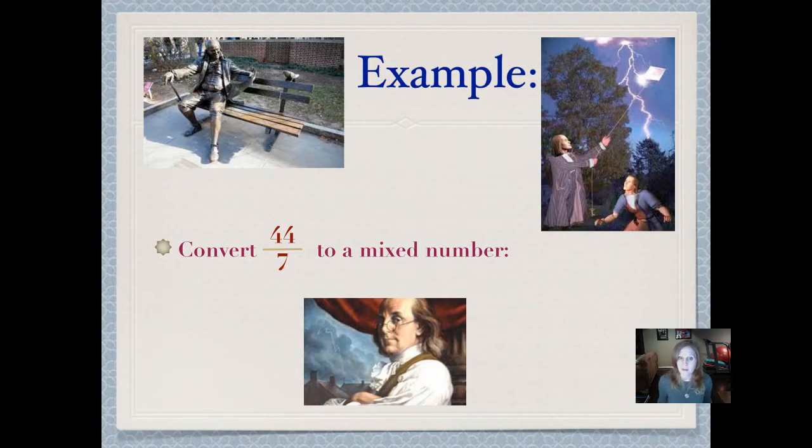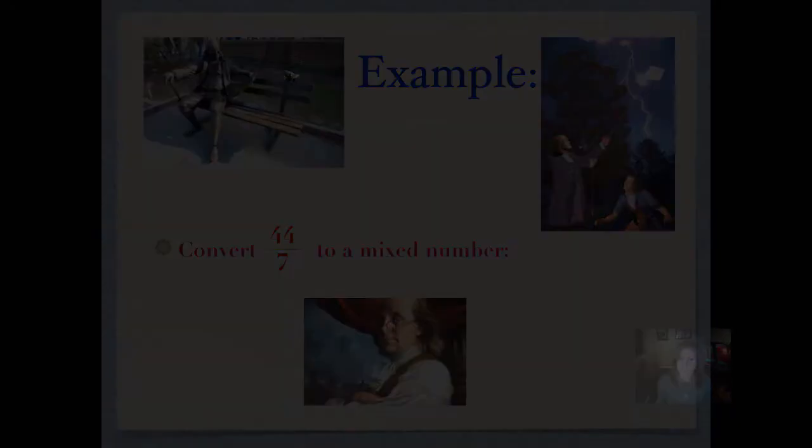We are going to convert 44 sevenths to a mixed number. So here is our example, 44 sevenths. It's definitely an improper fraction because the numerator is a lot bigger than the denominator. That means we have hidden wholes. As an example, one whole would be represented by seven sevenths. That's seven out of seven pieces, which means we have one whole.